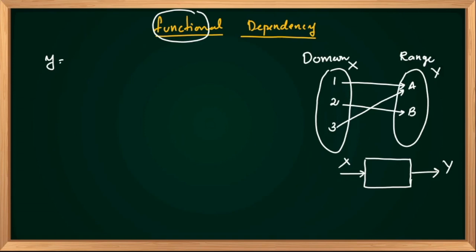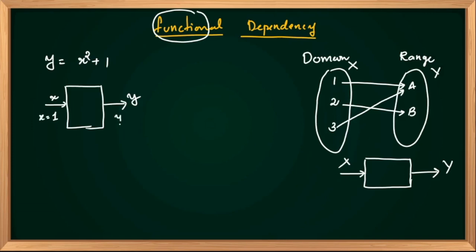Maybe mathematically, we have functions. For example, y is equal to x squared plus 1. That means you can give any value of x and get the corresponding value of y. For example, if x equals 1, then y equals 2. If x equals 2, given the value of x, you can always determine the value of y.